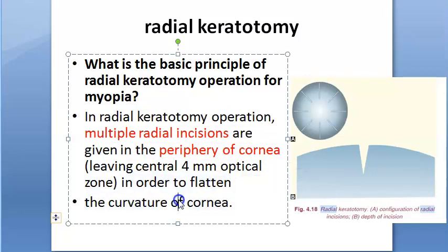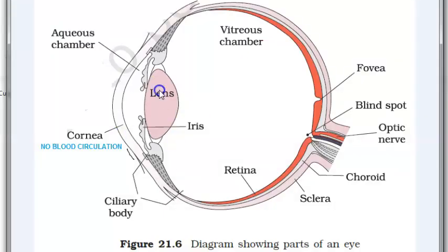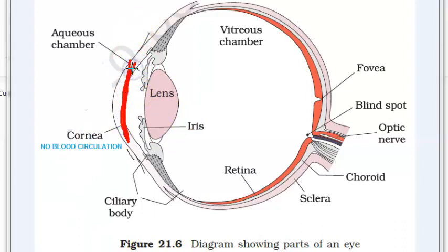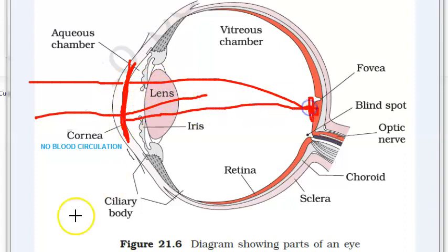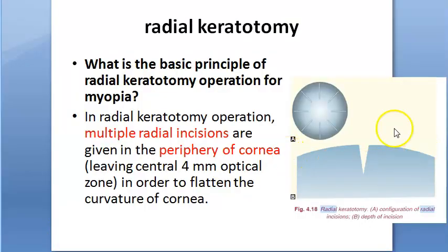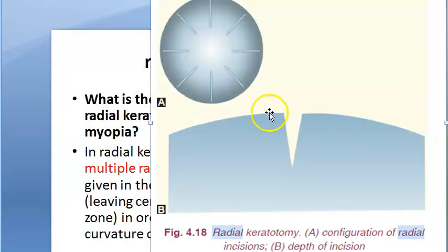Why are they doing this? In order to flatten the curvature of the cornea. If the cornea becomes a little more flat, it will not bend the light as much - the light will go a little more straight. Instead of bending and focusing in front of the retina, it will try to focus on the retina. So they are trying to reduce the curvature of the cornea and flatten it.